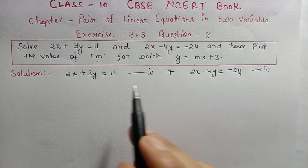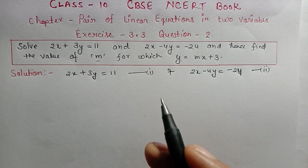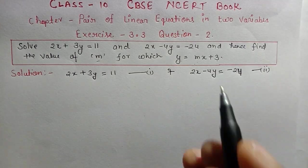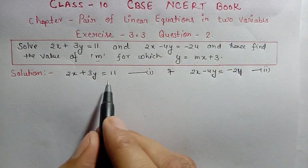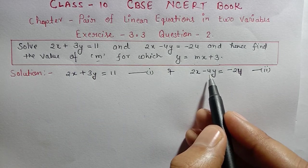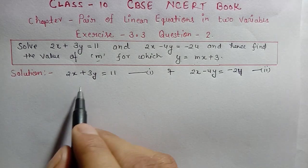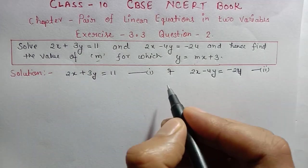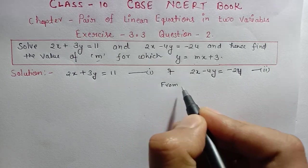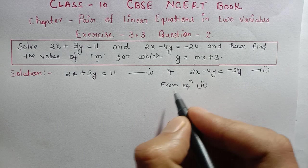The substitution method means we find the value of any one variable from one of the equations and then put that value into the other equation. So from equation number two, let's find the value of x.